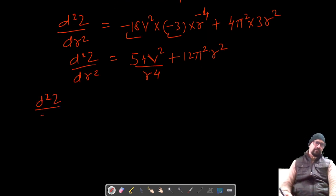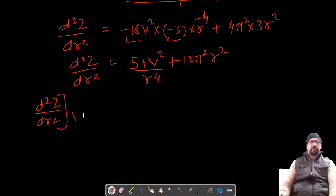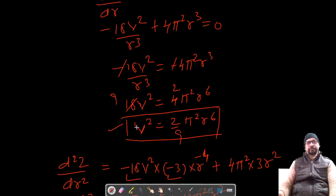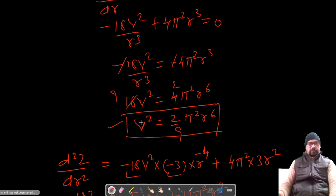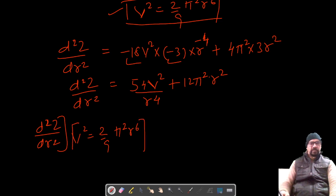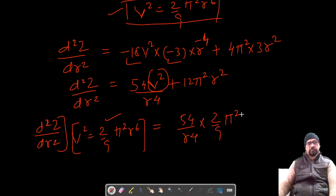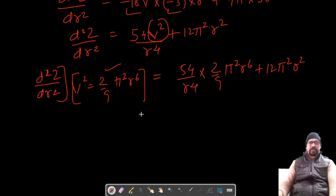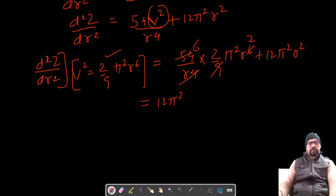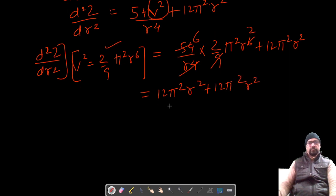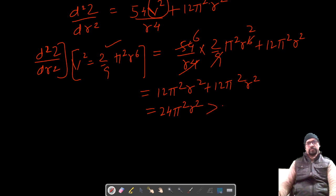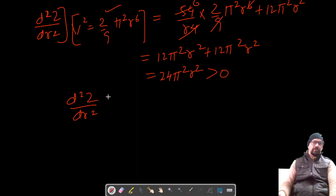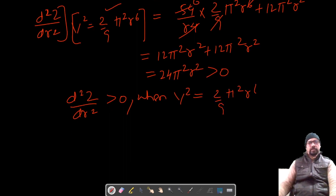Now let's check the value of the second order derivative when V² = (2/9)π²r⁶. Substituting this value: 54/r⁴ × (2/9)π²r⁶ + 12π²r² = 12π²r² + 12π²r² = 24π²r², which is greater than 0. So the second derivative is positive, confirming that z is minimum at this value.